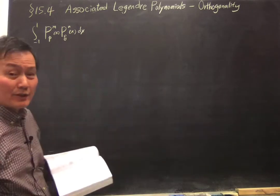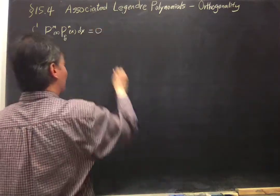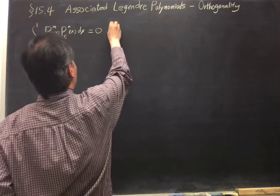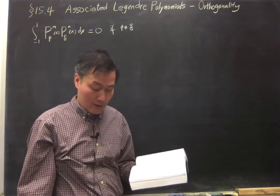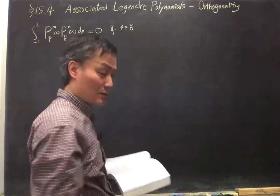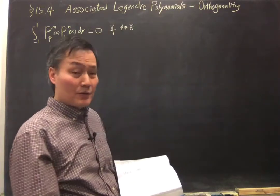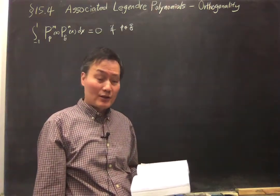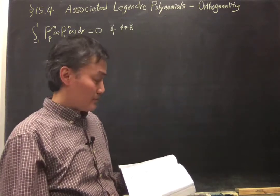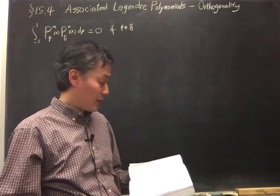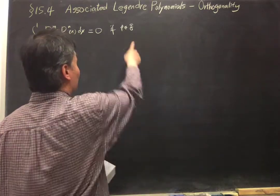You want to show whether this is orthogonal, and to show that is quite straightforward. This is 0 if p is not equal to q. To show this is quite straightforward, just like the Legendre polynomial. Now you use the associated Legendre equation rather than the Legendre equation to prove that, so the proof is basically exactly the same. I won't go into that. What is left is the discussion when p equals q.